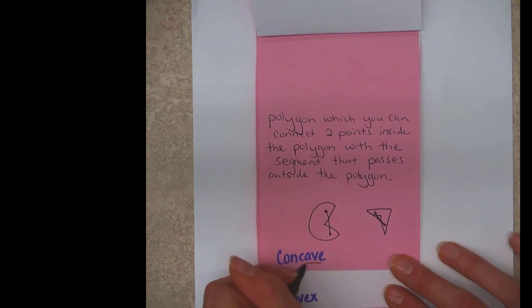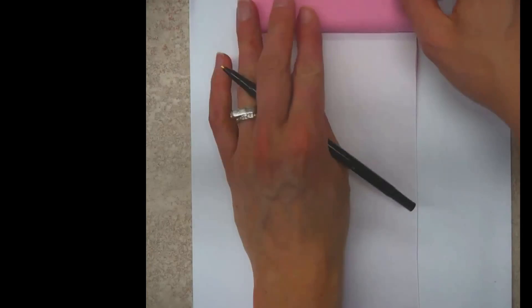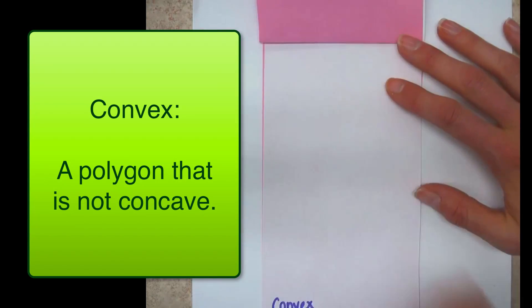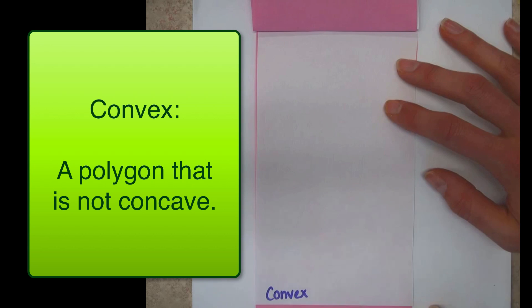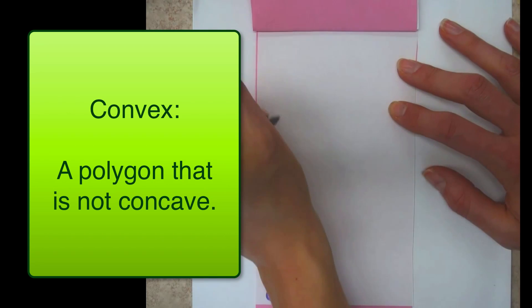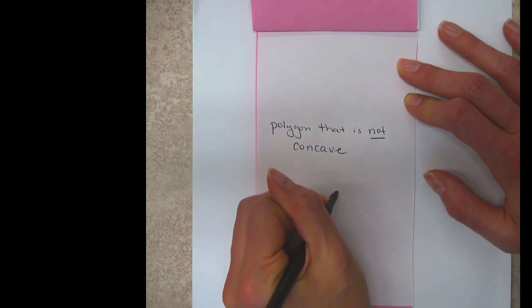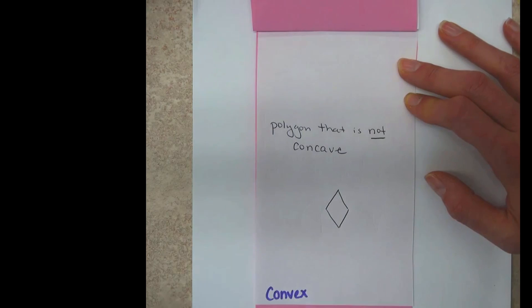All right, and then convex is basically not concave. It's the opposite. I mean, that's what it says, a polygon that is not concave. So there's no dent. So basically our normal shapes that we've been making would all work, right?